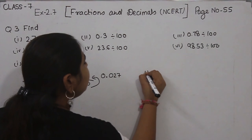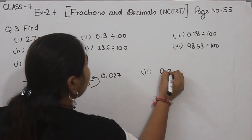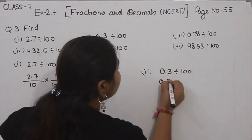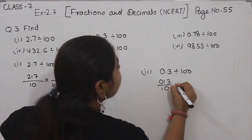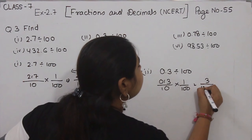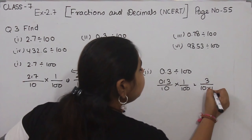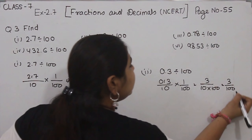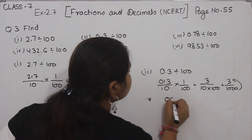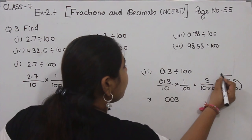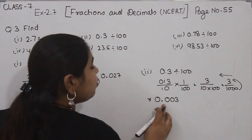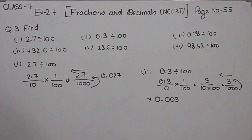Now Part 2: 0.3 divided by 100. Start with removing the decimal. Multiply 1 by 100. Now, 3 divided by 10, multiplied by 100, gives 3 divided by 1000. We are going to convert these zeros to the decimal, putting the decimal from right to left after 3 digits. So the value is 0.003. This is Part 2.